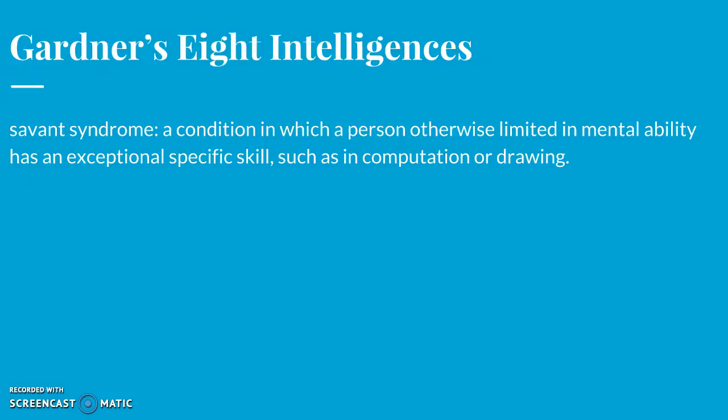Yet Kim Peake could not button his clothes and had little capacity for abstract concepts or sarcasm. When asked by his father to lower his voice, he slid lower in his chair to lower his voice box. Asked for Lincoln's Gettysburg address, he responded '227 Northwest Front Street' — where Lincoln only stayed one night before giving the speech the next day.